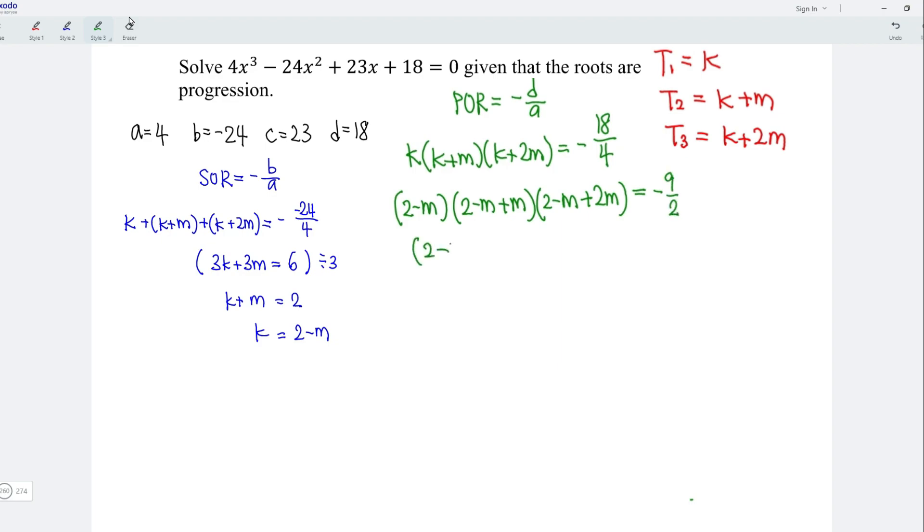So we should have 2 minus M, 2 minus M plus M is equal to 2, while 2 minus M plus 2M is equal to 2 plus M. And this is equal to negative 9 over 2. I'm going to divide both sides with a factor of 2, which means that I should have 2 minus M multiplied by 2 plus M is equal to negative 9 over 4.